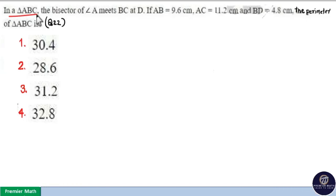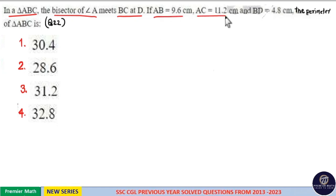In a triangle ABC, the bisector of angle A meets BC at D. If AB equal to 9.6 cm, AC equal to 11.2 cm and BD is 4.8 cm, then the perimeter of triangle ABC is.